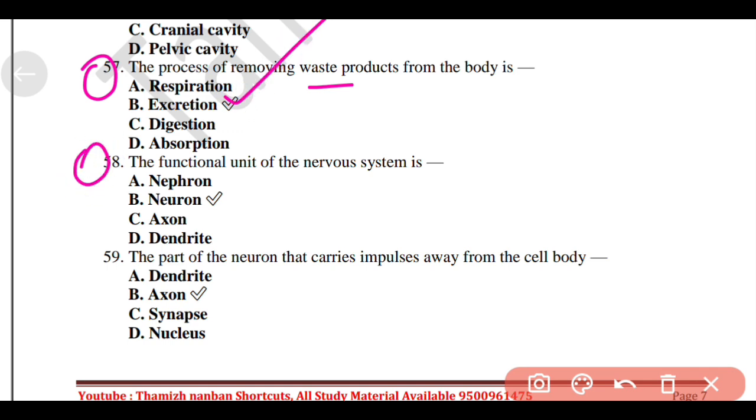The functional unit of the nervous system is option B, Neuron. The part of the neuron that carries impulses away from the cell body, Option B, Axon.